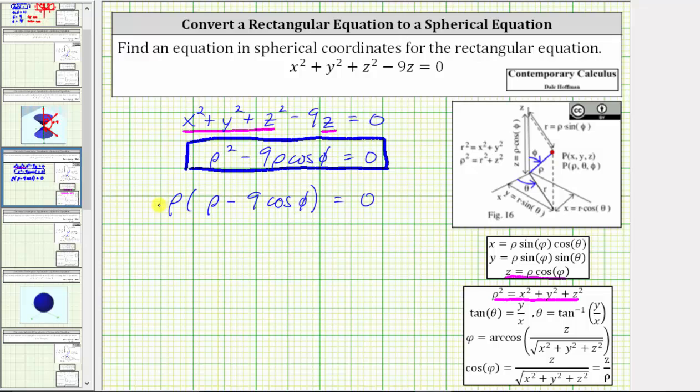The product on the left is equal to zero when rho equals zero, or when rho minus nine cosine phi is equal to zero.